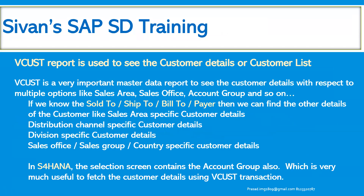VCUST report is used to see the customer details or customer list. It is a very important master data report to see the customer details with respect to multiple options like sales area specific, sales office specific, account group specific, and sales group specific. If you know only the sold-to code, ship-to code, bill-to code, or payer, we can extract other details of those customers — like which sales area, distribution channel, division, sales office, or sales group that particular customer belongs to.